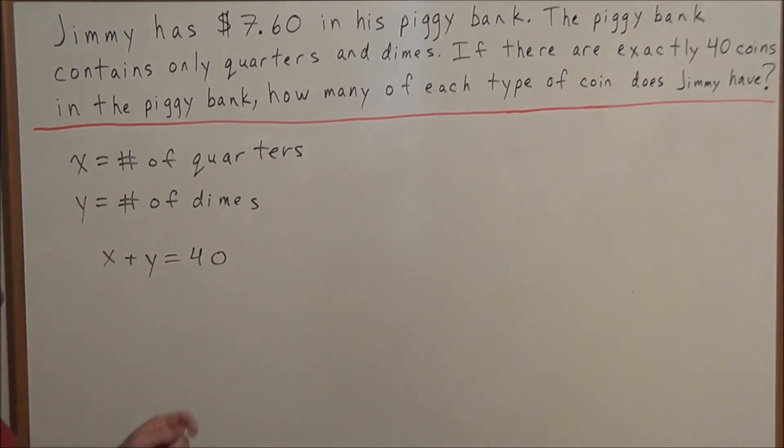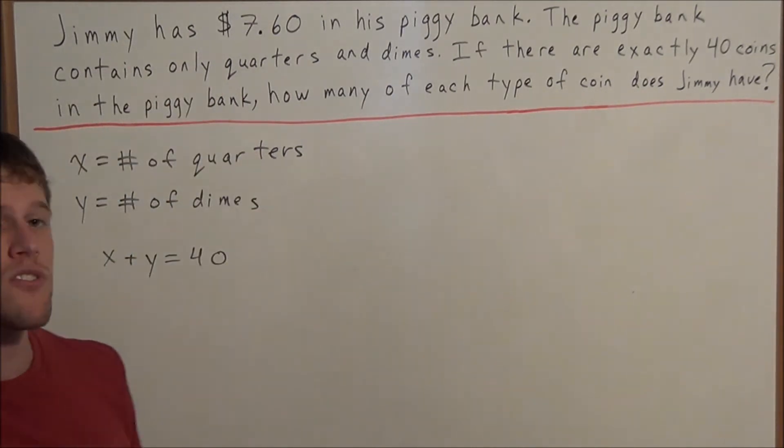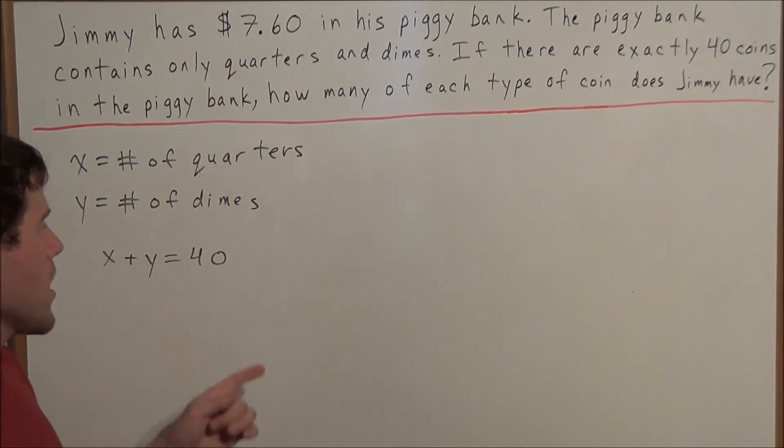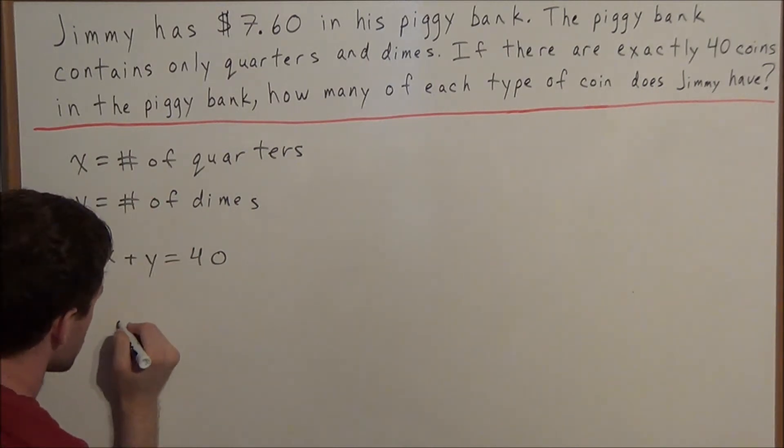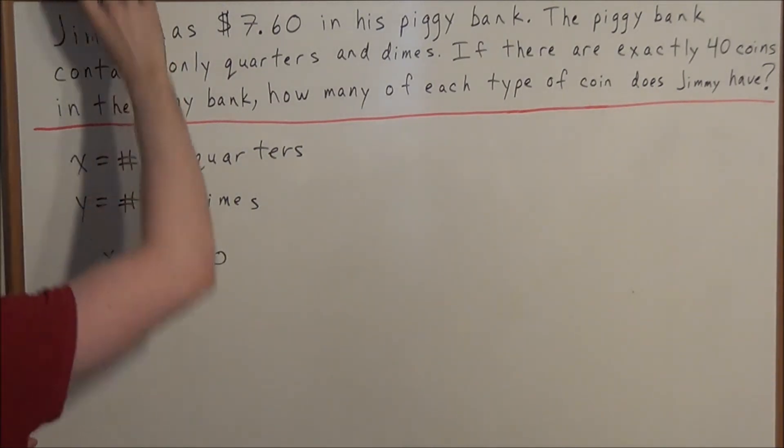And now the second thing we can say, we know that Jimmy has $7.60 in his piggy bank. And since they're only in quarters and dimes, we can set up an equation. We can start by saying 0.25 times x.